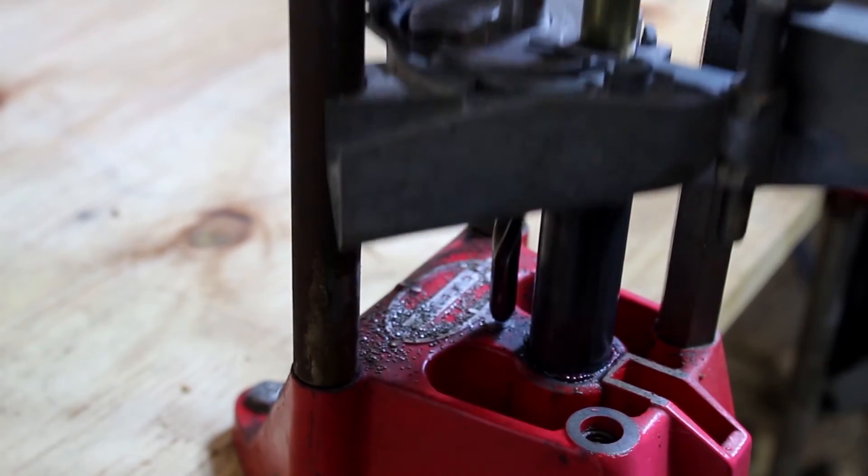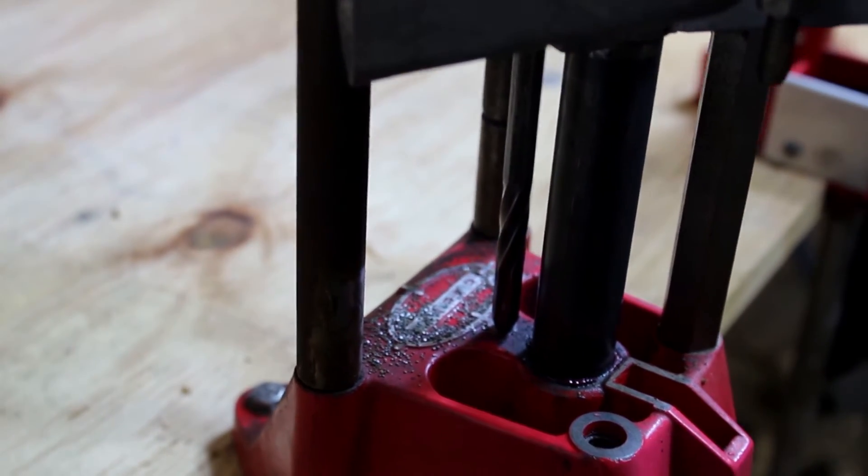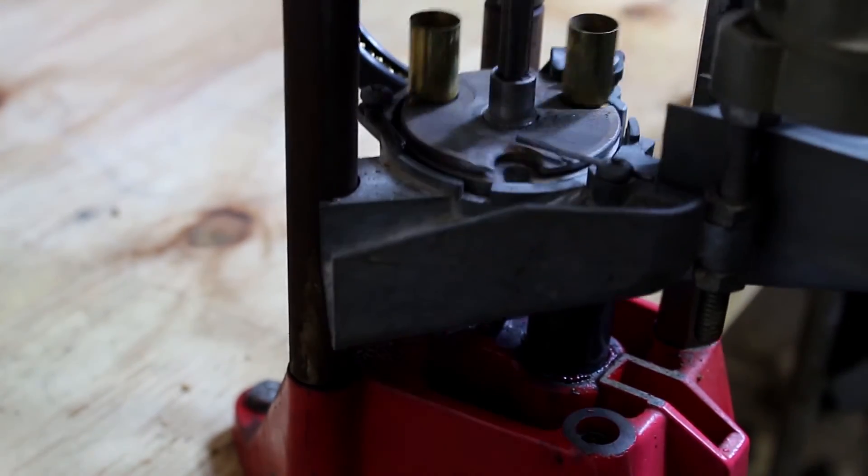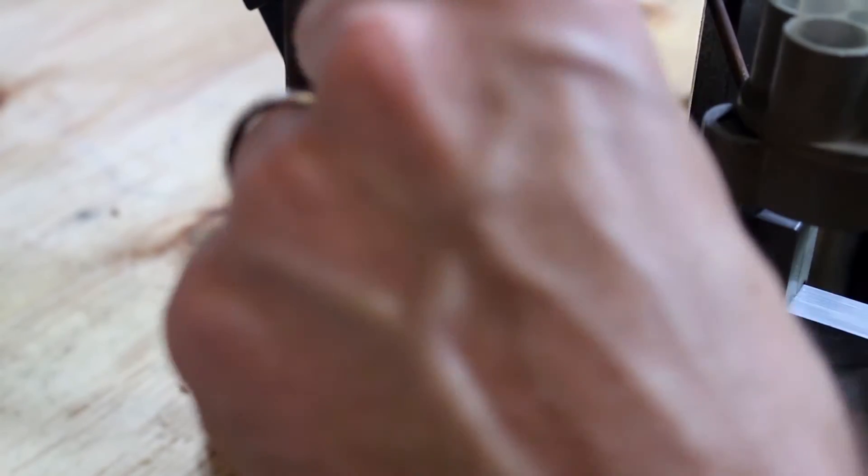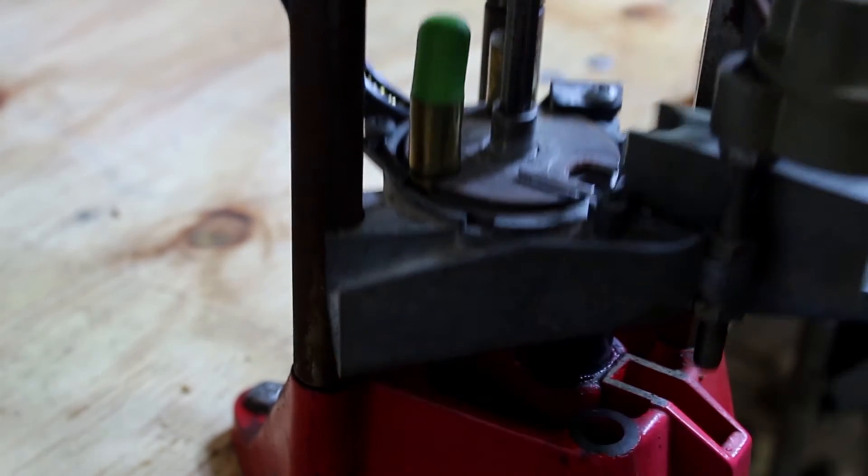This is my progressive reloading press. I'm not going to go into detail on how it works, but basically the machine puts in a new primer and fills it with gunpowder. Then all I have to do is hold the holder on top of the case and the machine will press it into place.